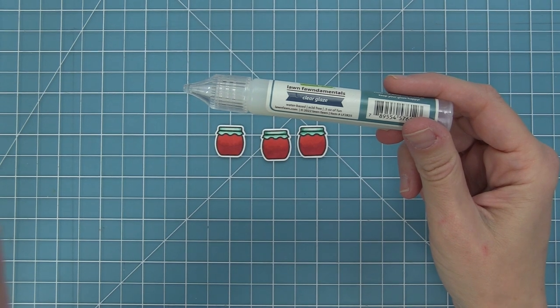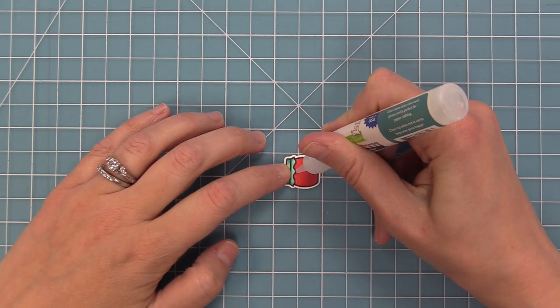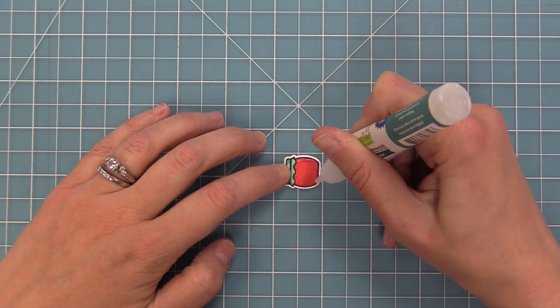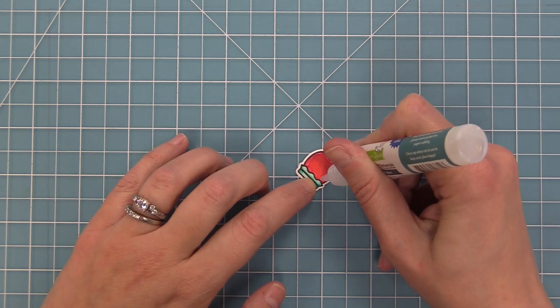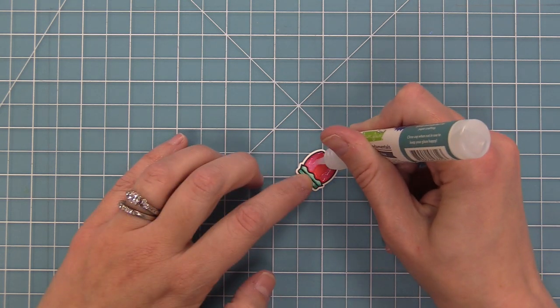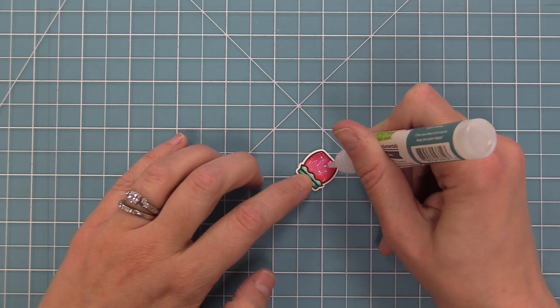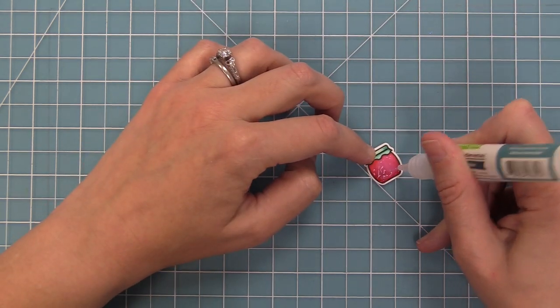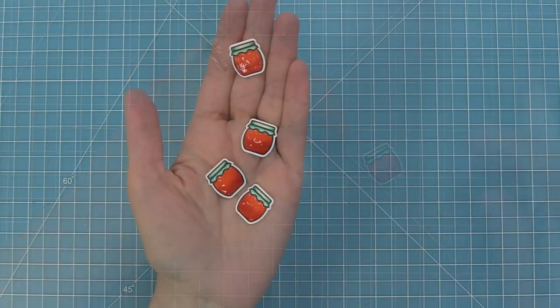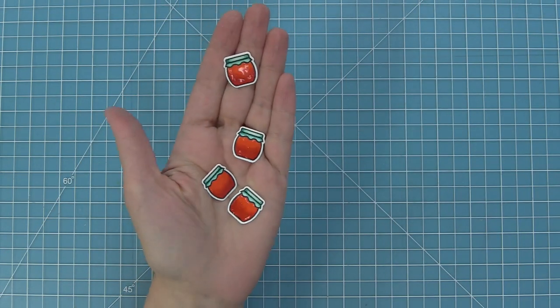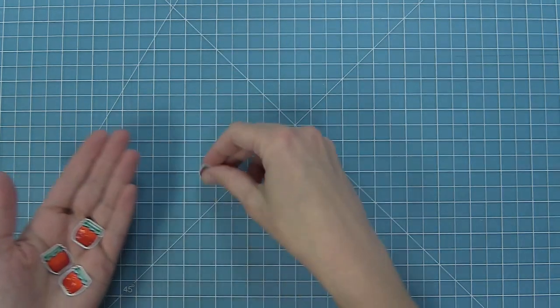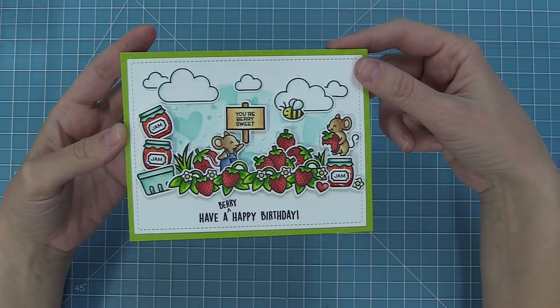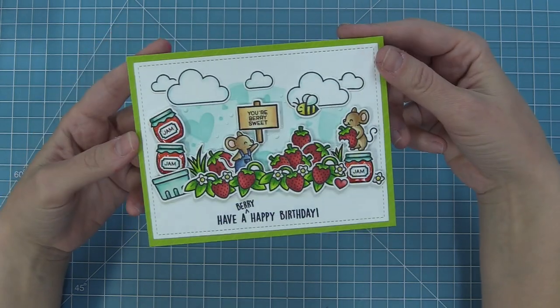The clear glaze is perfect for adding accents to projects and here I use them on this cute little jam jar that we have in the Berry Special stamp set. Now one of the ways I like to use them if I'm filling in a larger area is almost like decorating a cookie. So I kind of go around the edges and then I start filling in the center and that way you can get this really cool glossy look that's going to look like you've actually put a little glass jar on your projects. Then once that glaze dries you can see how cute and pretty that is. And as you add that onto the card it just adds that perfect extra little detail that is so cute and adorable.